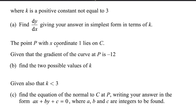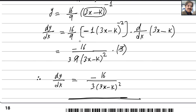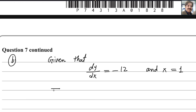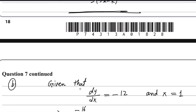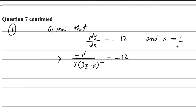For the next part, the point P with x-coordinate equal to 1 lies on C. Given that the gradient of the curve at P is negative 12, find the two possible values of k. Gradient is always dy by dx. So dy by dx equals negative 12 and x equals 1. We already found dy by dx in the previous part: minus 16 over 3 into 3x minus k squared equals negative 12.